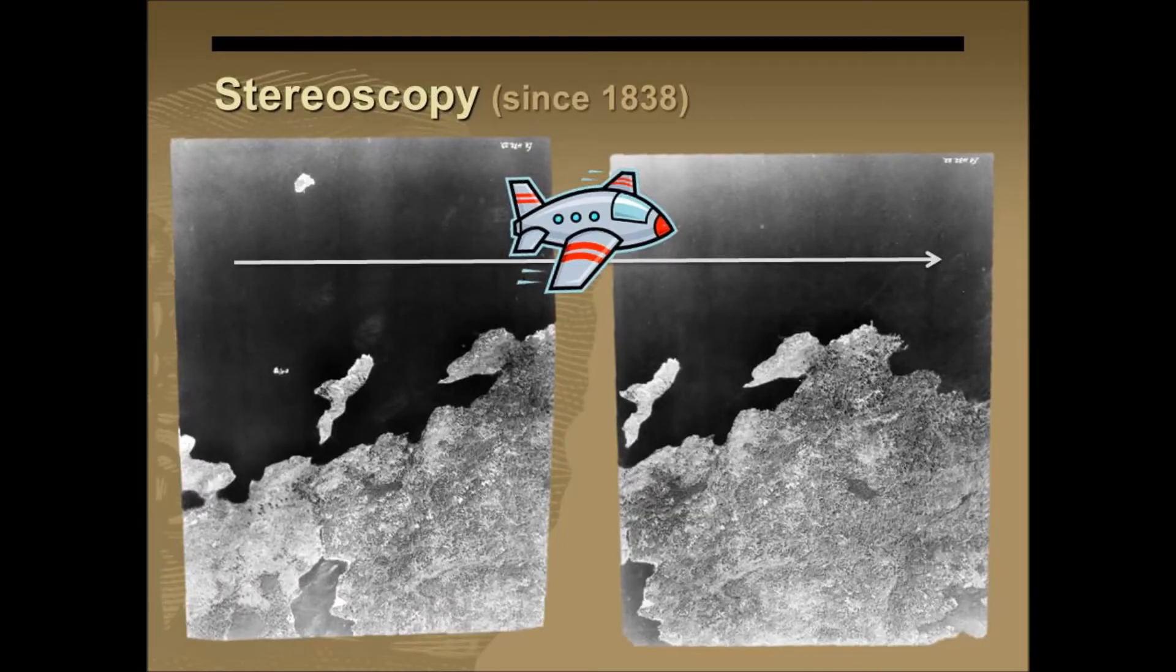As the plane flies over the landscape, each successive image is taken on the same plane. We can use the stereoscope to feed each successive image one to each eye, and then look at the overlapping areas in 3D.